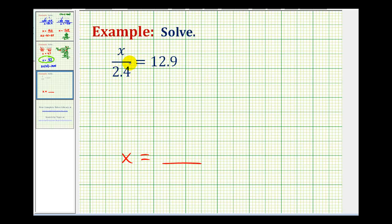So looking at the left side, remember a fraction bar means division. So this is x divided by 2.4 equals 12.9. We want to undo this division.